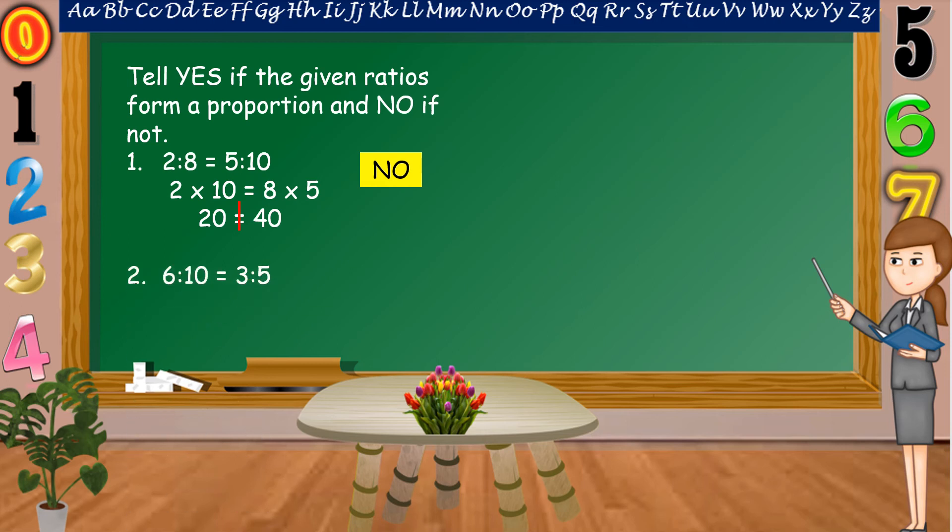Next number, 6 is to 10 as 3 is to 5. Yes or no? Alright, it is yes. Yes, 6 times 5 is equal to 30 as 10 times 3 is equal to 30.